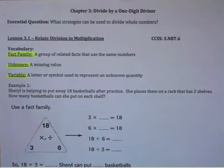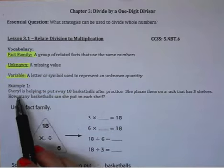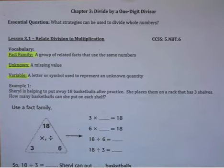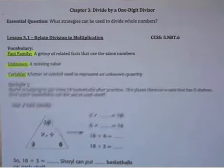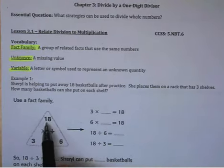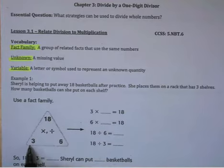Let's move to example 1. Example 1 says, Cheryl is helping to put away 18 basketballs after practice. She places them on a rack that has three shelves. How many basketballs can she put on each shelf? Now, we can solve this problem using a fact family. So you see here, we know that we have 18 balls and three shelves.